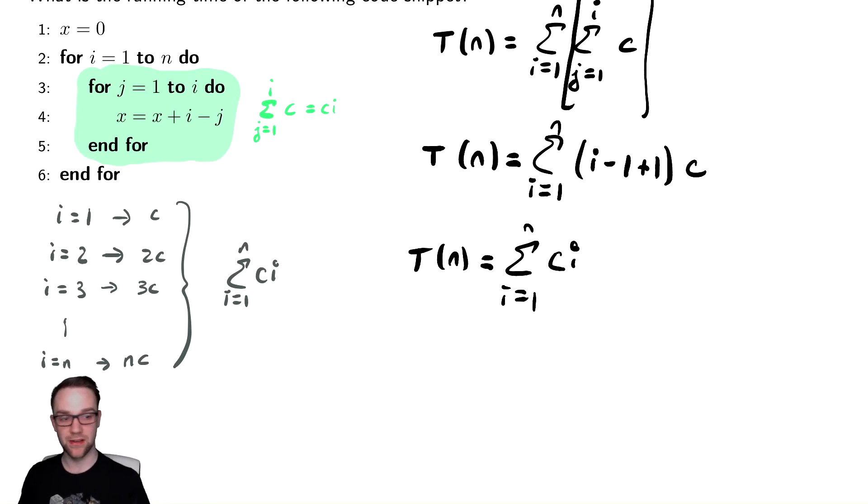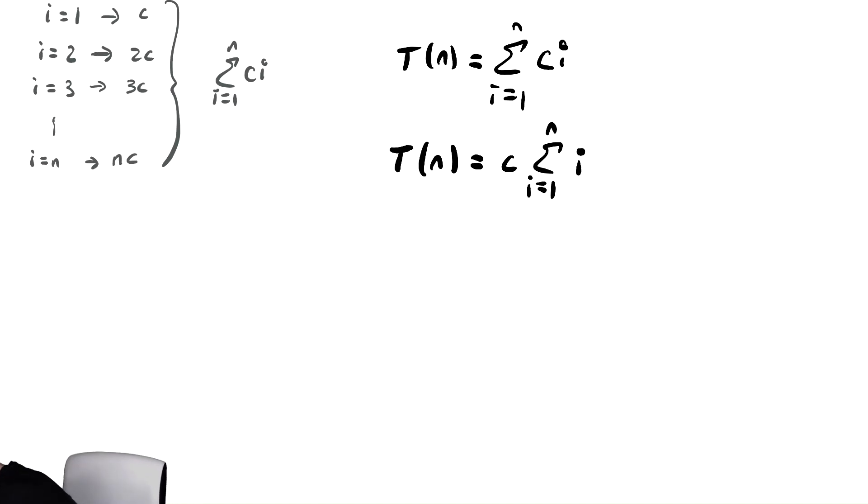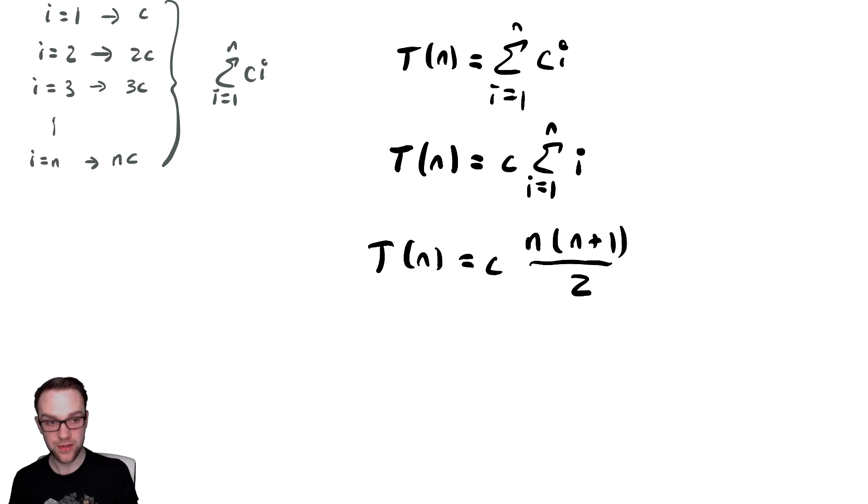So T of N is equal to the sum from I equals one to N of CI. You might be able to identify that that is an arithmetic sum. An arithmetic sum you can use a formula for if we can get it into our exact form. So I can factor C out of the summation and we have T of N is equal to C times the sum from I equals one to N of I. We've seen that summation a couple of times already. We should hopefully have some vague sense of what that converges to. It converges to N times N plus one divided by two. So this is equal to C times N times N plus one divided by two.